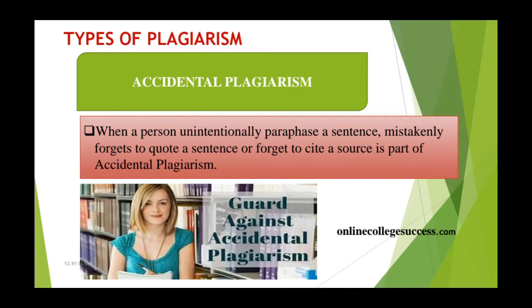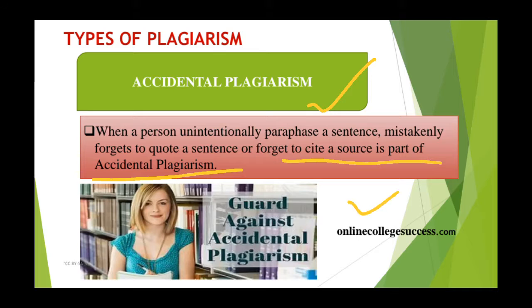Next is accidental plagiarism — you plagiarize by accident. This happens when you unintentionally paraphrase a sentence, mistakenly forget to quote, or forget to cite a source. This accident occurs when you are unaware or ignorant. If you do not know what plagiarism is or what types exist, you will unintentionally paraphrase, forget quotation marks, or fail to cite. The best method to avoid accidental plagiarism is to be aware about plagiarism — and that is the purpose of this video.